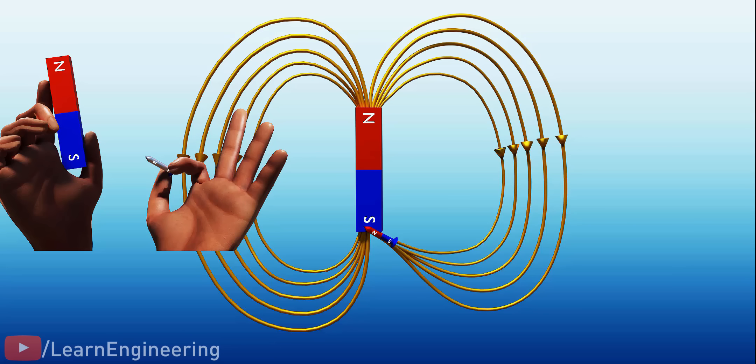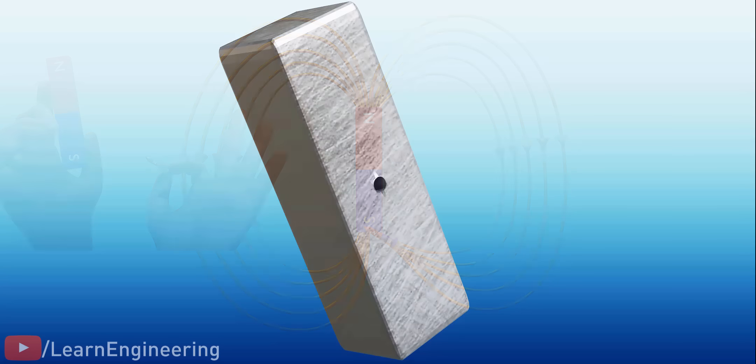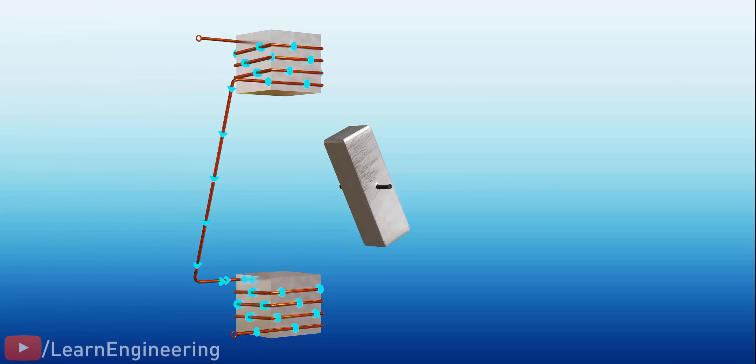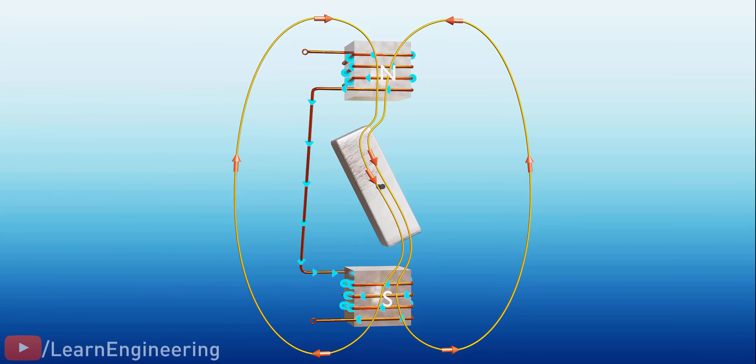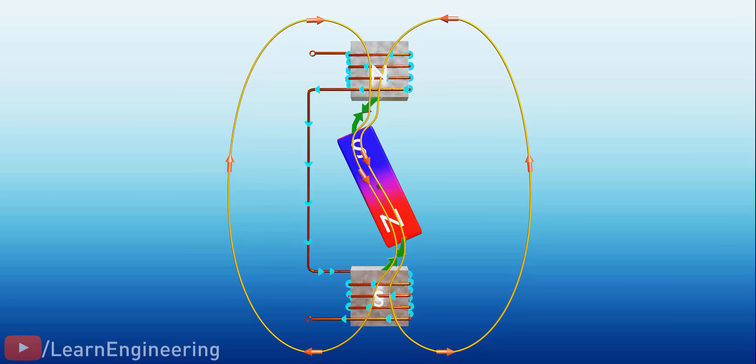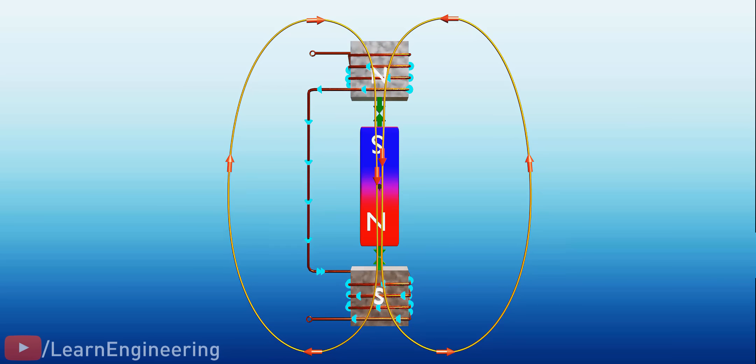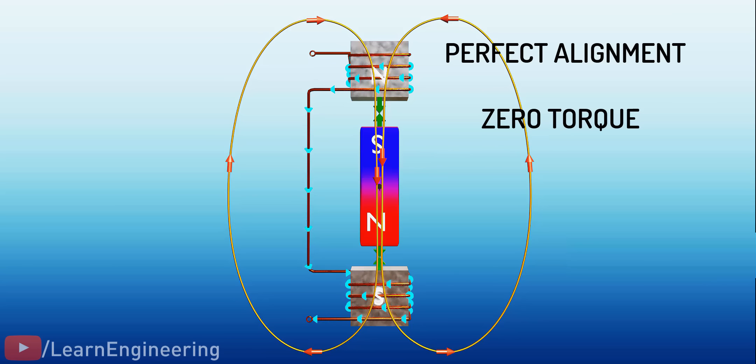Let's do an experiment and generate a torque using the reluctance force concept we have just learned. A solid iron bar, which is free to rotate, is positioned as shown. Now, let's keep an electromagnet at an offset to the iron bar. The iron bar will definitely be attracted to the electromagnet due to the reluctance force, and it will rotate. However, after being aligned with the magnetic field, the torque on the iron bar becomes zero. This is a crucial concept to note. When the iron bar and the magnetic field are perfectly aligned, the torque on the rotor will be zero.